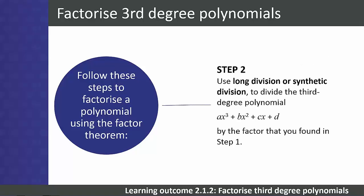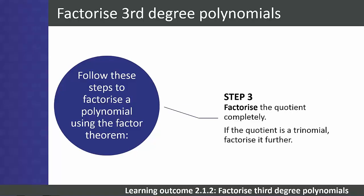Step 2. Using long division or synthetic division, divide the third-degree polynomial by the factor that you found in step 1. Step 3. Factorize the quotient completely. If the quotient is a trinomial, such as a quadratic expression, factorize it further.